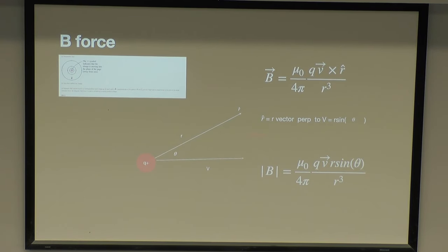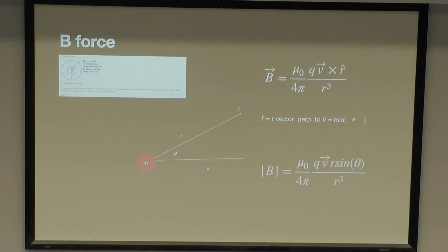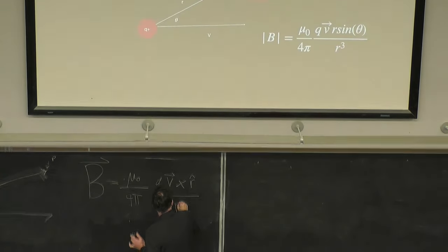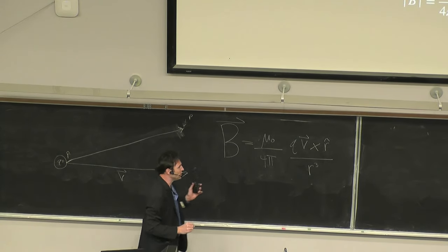In the most formal terms, the vector magnetic field involves a constant called the permeability of free space — the ability of space to support a magnetic field, which is different for different substances. Unless otherwise specified, we'll always assume it's the permeability of free space, mu-naught. The ability of free space — essentially what we think of as a vacuum — to support a magnetic field. Then we have the constant 4 pi on the bottom, then Q, our charge, V cross R-hat, and then the magnitude R cubed on the bottom.